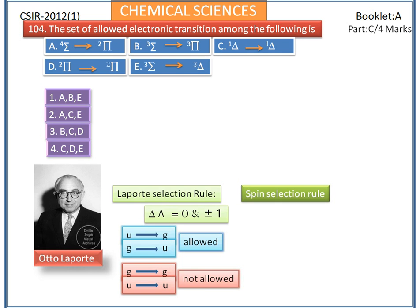Next, the spin selection rule: there can be no change in spin multiplicity during the transition, i.e., delta S = 0. Therefore, a singlet state must be excited to another singlet state, a triplet state must be excited to another triplet state, and so on. No transitions from singlet to triplet or other situations where the multiplicity changes are allowed.